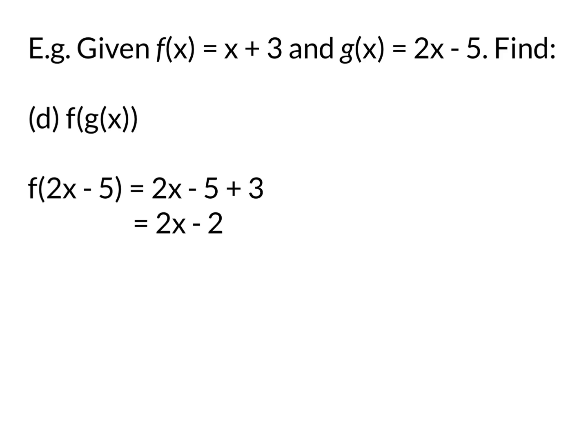What about if we put the function inside, so g(x), inside the first function, f(x)? So for f(g(x)), we have f, and the g(x) we replace by what g(x) actually is, 2x - 5. Wherever there is an x in the f function, we replace it with 2x - 5. So you get 2x - 5 + 3 gives you 2x - 2.